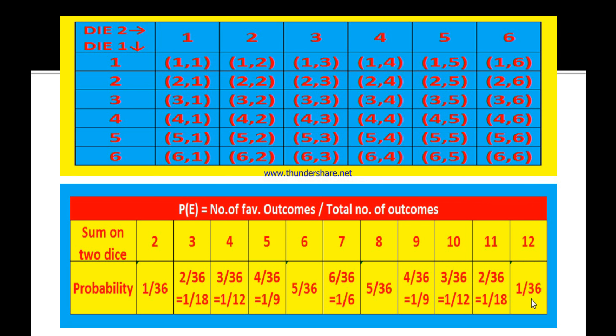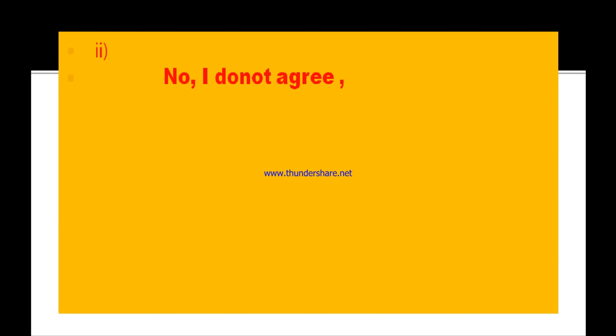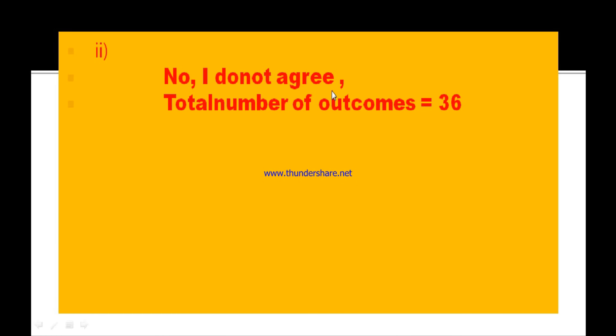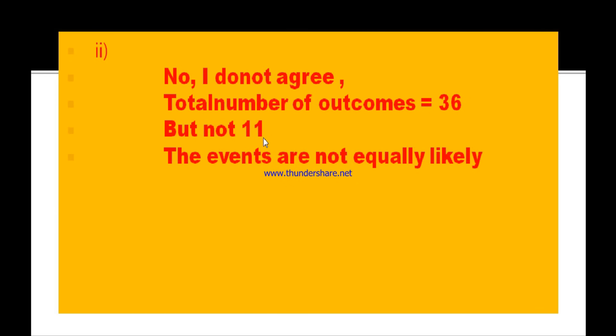This is how we solve the first part. Now for the second part: a student argues there are only 11 outcomes, but from our table we counted the total number of outcomes as 36. Therefore, our answer is no — I do not agree with the student. The reason is the events are not equally likely.